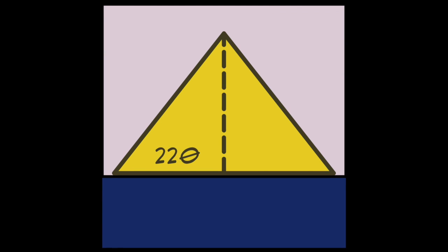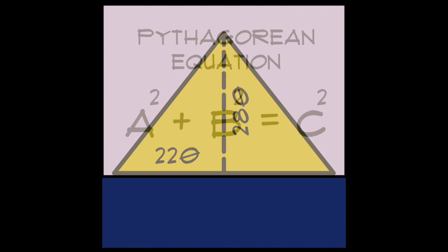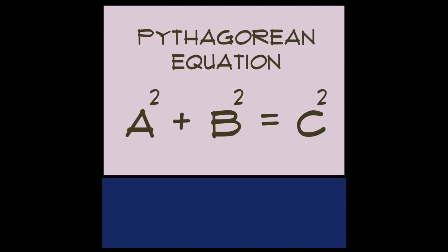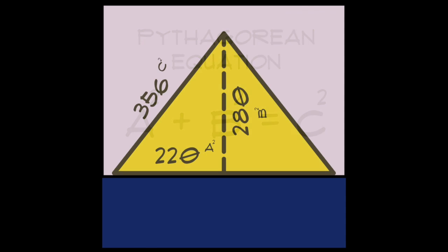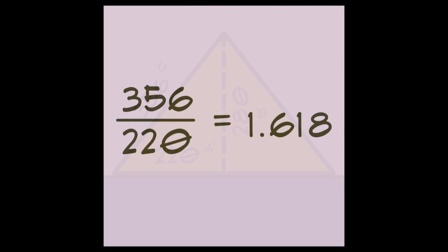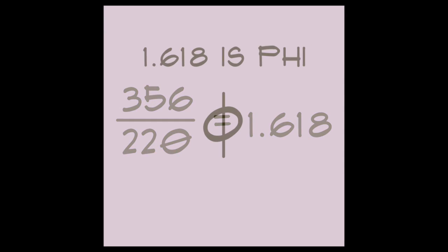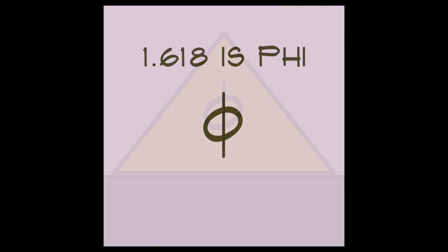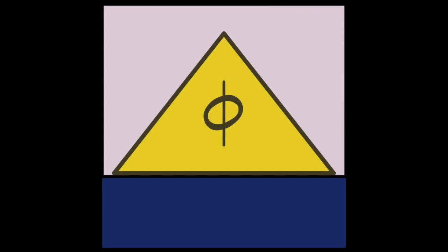Half the length of the base of the Great Pyramid is 220 cubits, the height is 280 cubits, and the hypotenuse is 356 cubits. The proportions of the Great Pyramid equal the Golden Ratio.